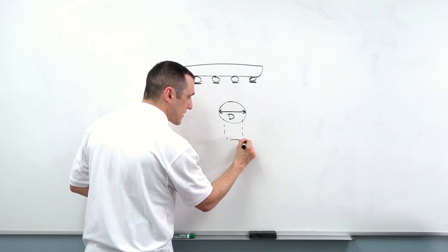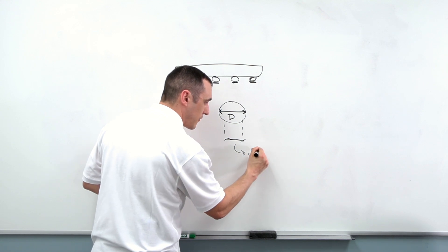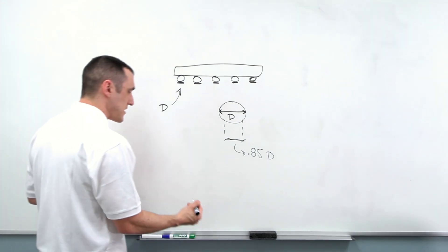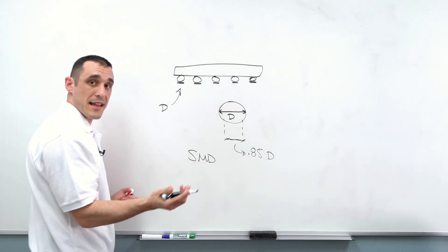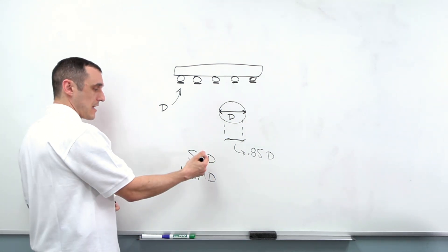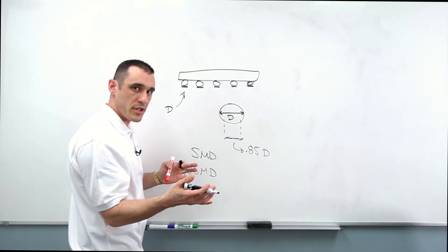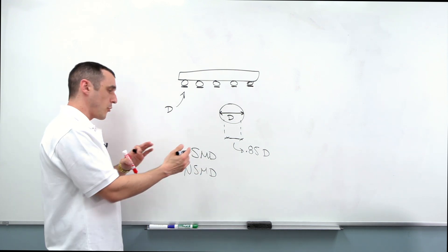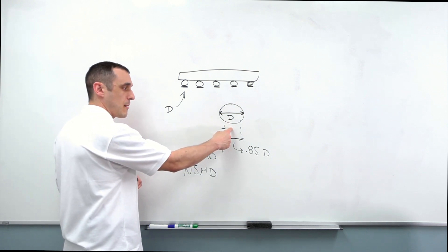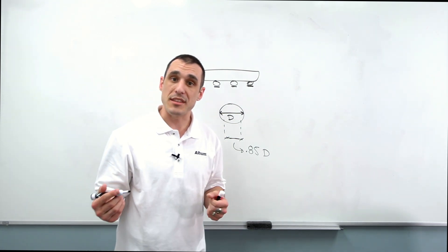A good rule of thumb, if you don't have access to IPC standards, is about 0.85D — or 85% of the ball diameter. So that's usually your starting point. This can be an SMD pad — a solder mask defined pad — or it can be an NSMD pad. Whether you should use SMD or NSMD pads on big BGAs versus smaller BGAs, I'll cover that momentarily. But before we get into SMD versus NSMD, I want to dig more into this ball diameter versus pad size issue because this is actually standardized in the IPC standards.